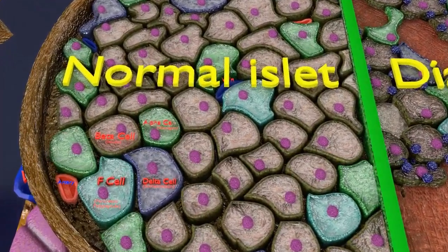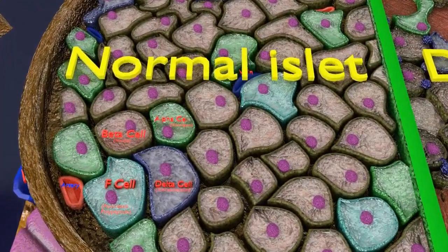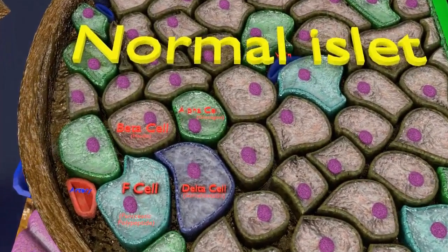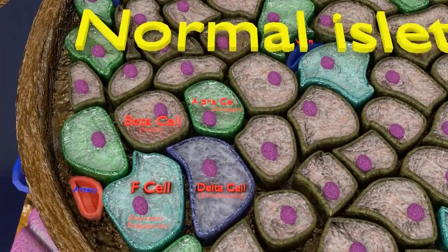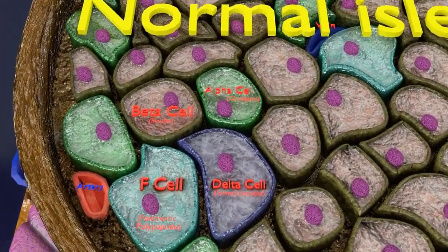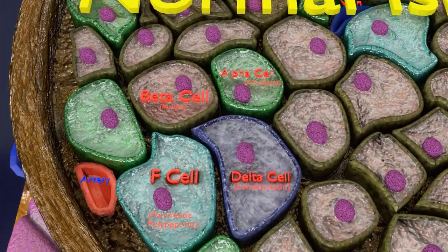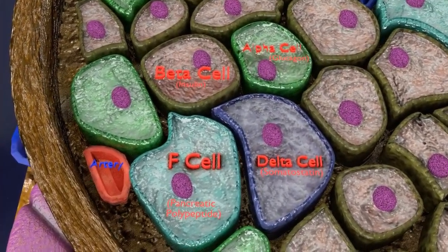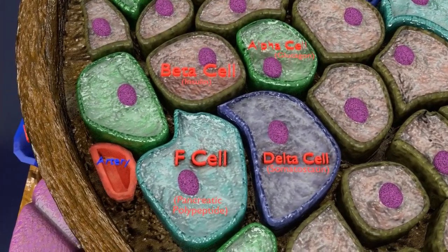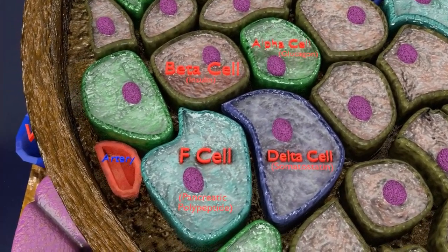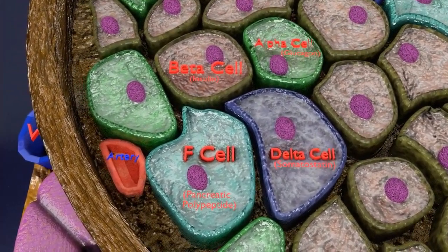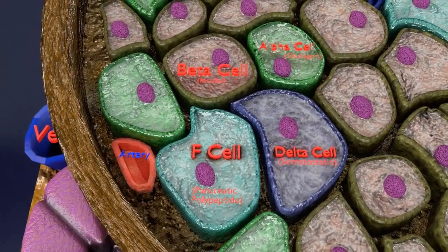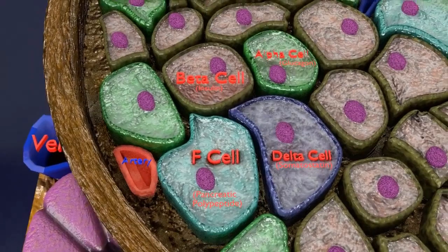As you can see now, the difference between the normal islet cells and the islet of a diabetic pancreas. In normal islet structure, we can see normal alpha cells that produce glucagon, the beta cells that produce insulin, the delta cells that produce somatostatin, and the PP cells, or gamma cells, or F cells, that produce pancreatic polypeptide.